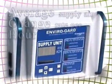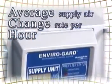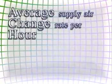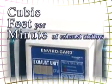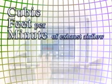The supply unit features an easy-to-view display of the rack's overall average supply air change rate per hour. The exhaust unit displays the overall average cubic feet per minute of exhaust airflow rates.